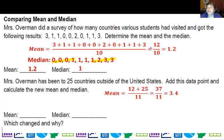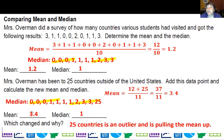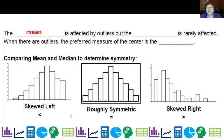I had the 12 from here plus my 25, and now there are 11 of us. That's 37 divided by 11, which is 3.4. For the median, there's my 25 added on, cross off equal size groups, and my median is still 1. Which one changed? It's the mean. Outliers will have an effect on the mean. The mean is affected by outliers, but the median is rarely affected. When there are outliers, the preferred measure of center is the median.